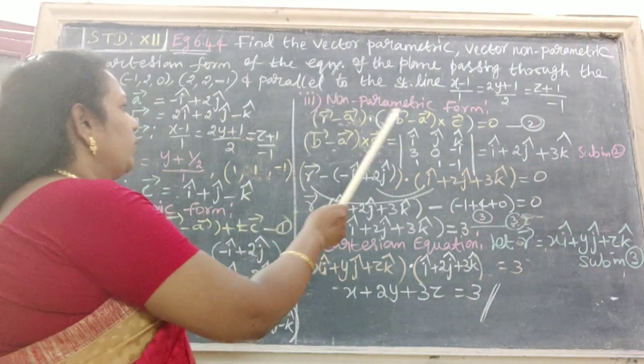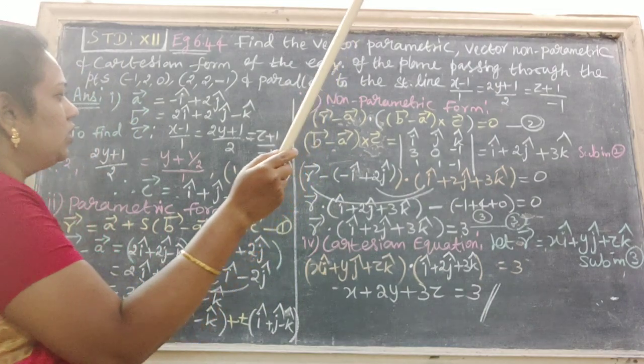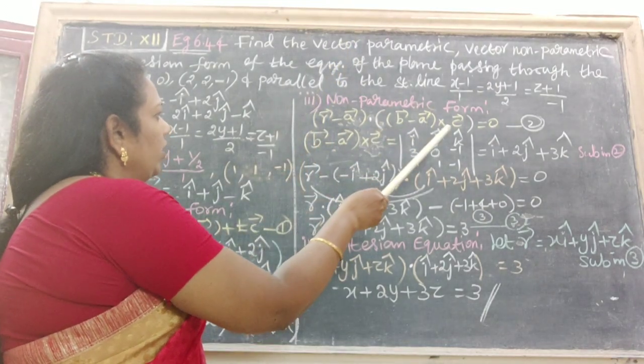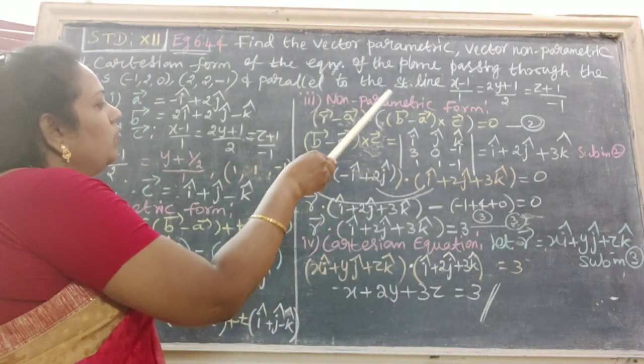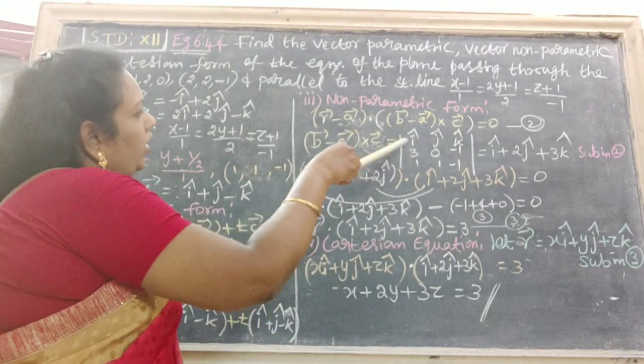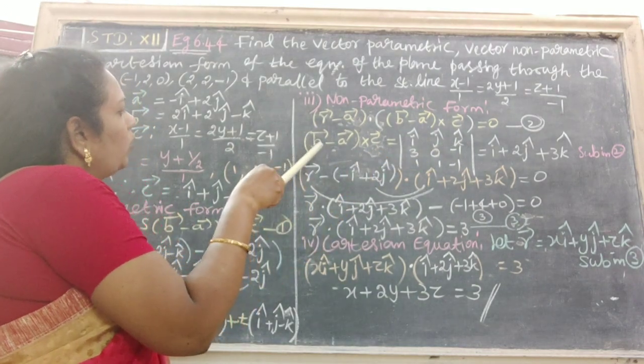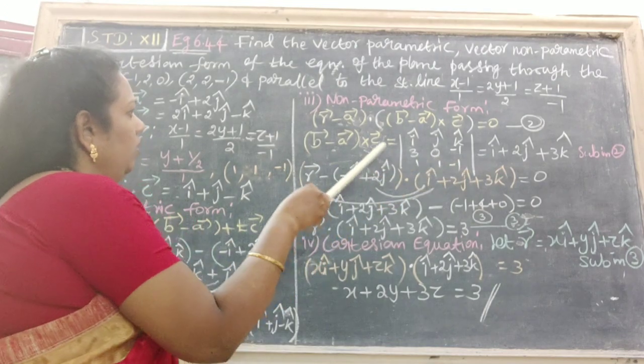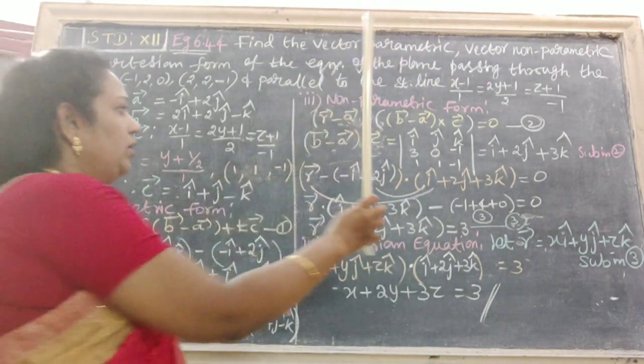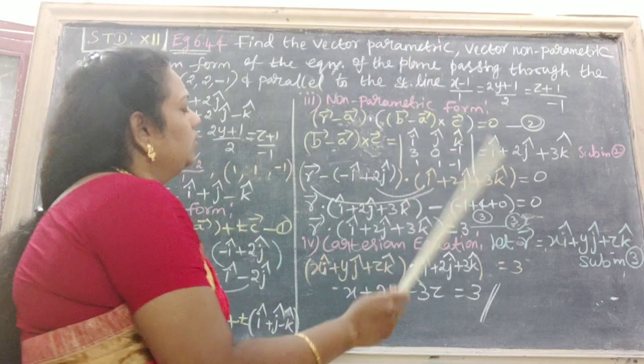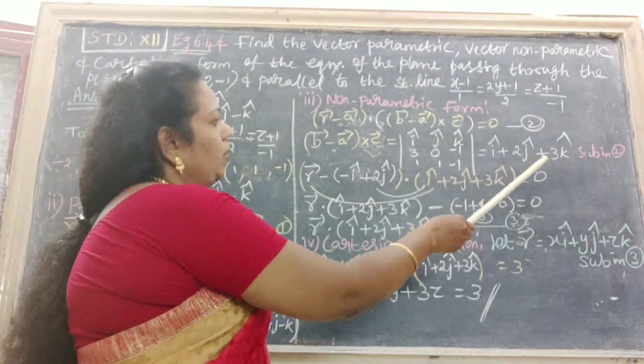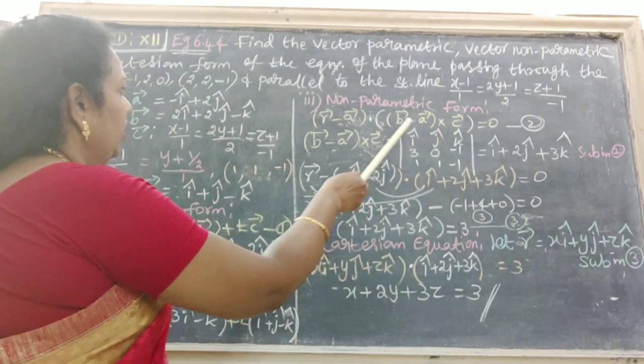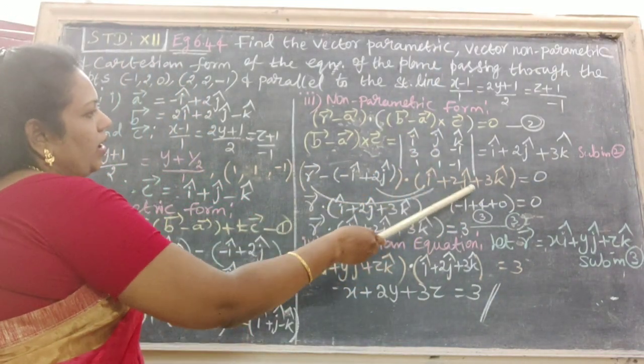Third one is non-parametric form. Write down the equation, that is equation number 2. Here, to find the value of b vector minus a vector cross c vector. Therefore, we substitute determinant method: i cap, j cap, k cap, then write down the coefficients of i, j, k in b minus a, then c vector. Then, applying T method, already we know that. Then, simplifying, we get i cap + 2j cap + 3k cap. Here, substitute in second equation here. Therefore, we get the answer.